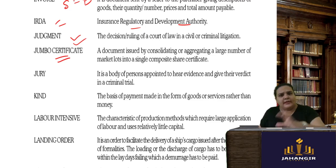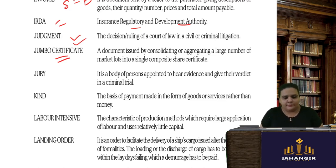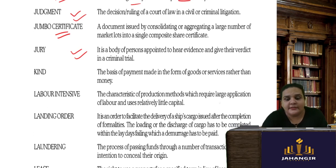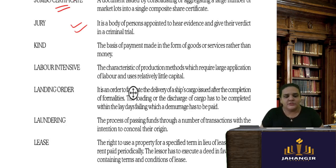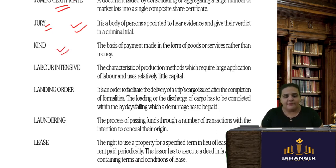A jury is a body of persons appointed to hear evidence and give a verdict in a criminal trial — apart from the judge, there is also a jury. Kind payment refers to payment made in the form of goods and services other than money.